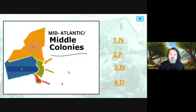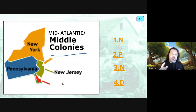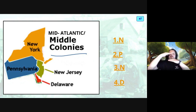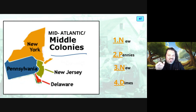Now we move to the middle colonies — the mid-Atlantic. In order: one, New York; two, Pennsylvania; three, New Jersey; four, Delaware. Those four make up the middle of the colonies. The mnemonic is N-P-N-D: New Pennies, New Dimes — New York, Pennsylvania, New Jersey, Delaware. We'll practice that in class.